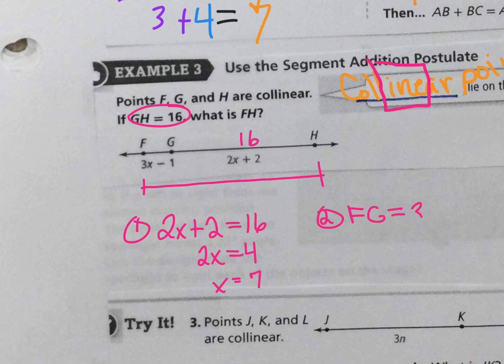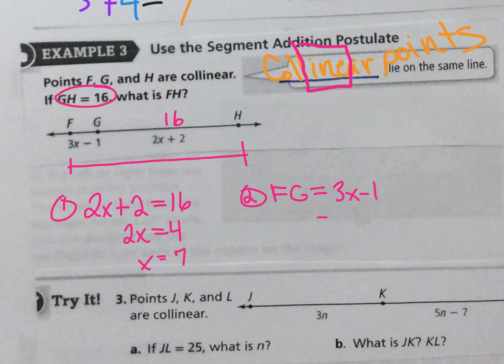FG equals 3X minus 1, so I can put 7 in and I get 20. Now I want you to look at this for a second, let's just take a second. This is 20.